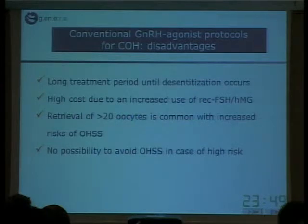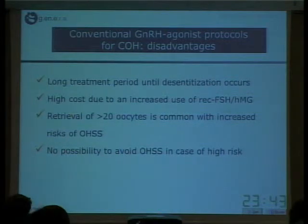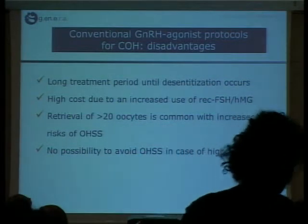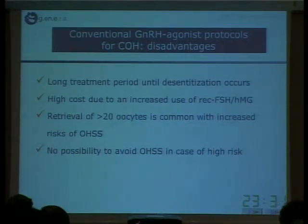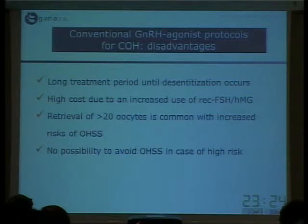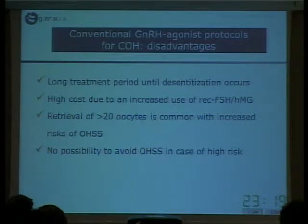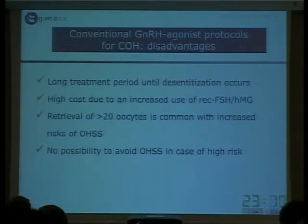However, the GnRH agonist protocol has some disadvantages. They require a long pretreatment period until desensitization occurs, and there is a higher cost due to increased use of gonadotropins. Especially in good responder patients, it is very likely to have more than 20 oocytes, exposing these patients to an important risk of ovarian hyperstimulation. There is no possibility to avoid ovarian hyperstimulation in patients with high risk — this is the crucial point we are going to discuss in this lecture.